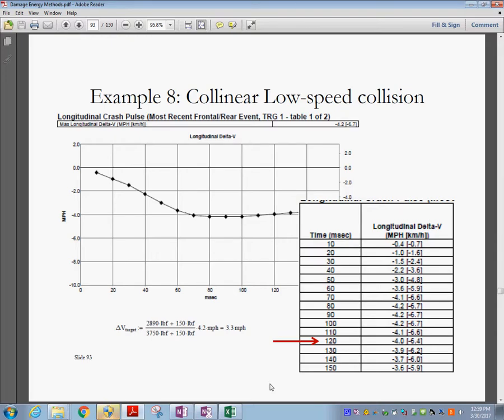So this is a longitudinal crash pulse. You can see the table here that comes from the EDR. And that way it can help us analyze this delta V that we're looking for.